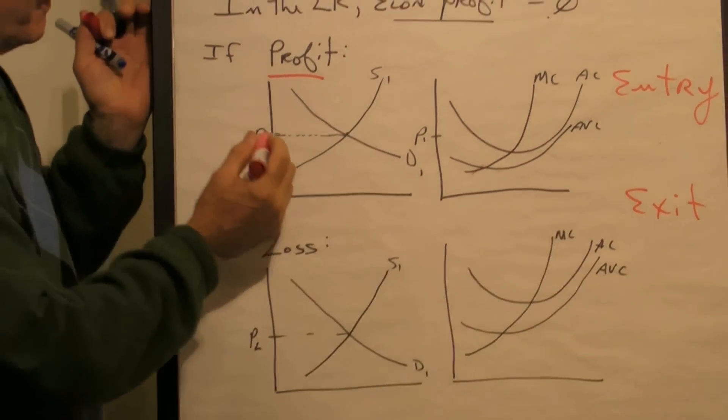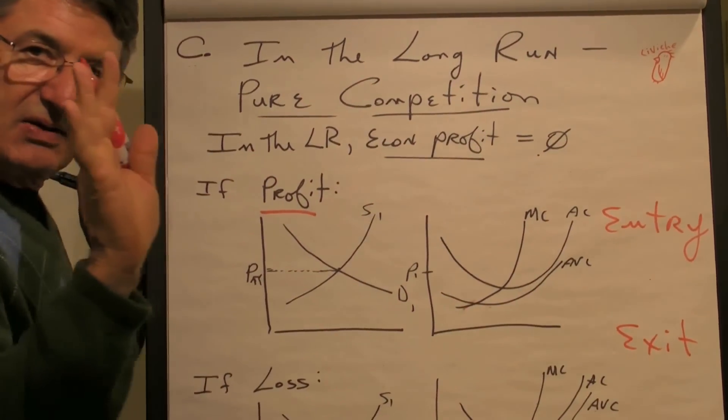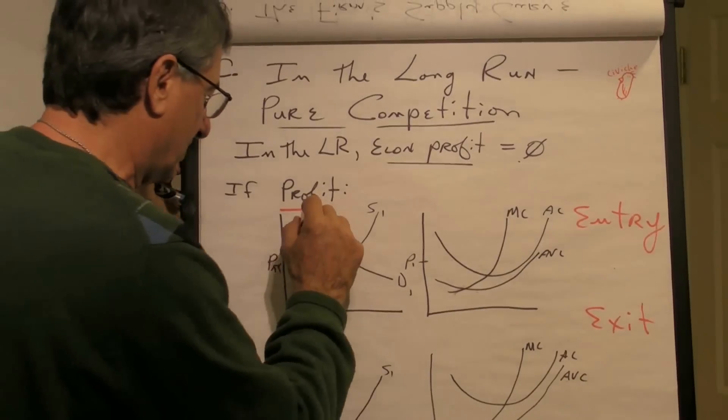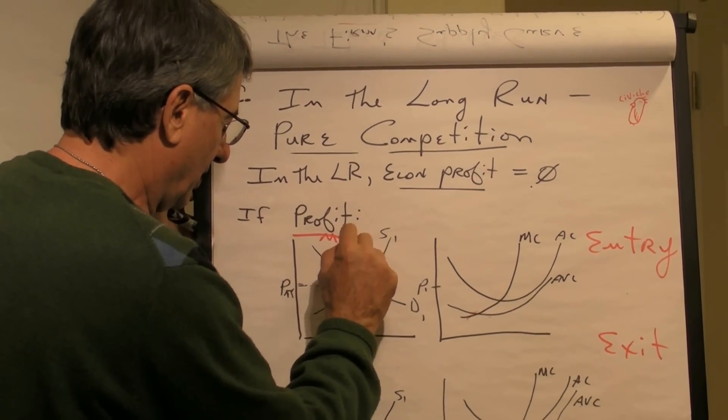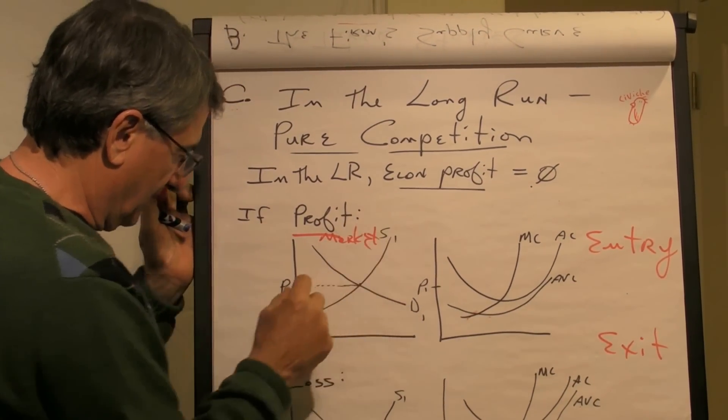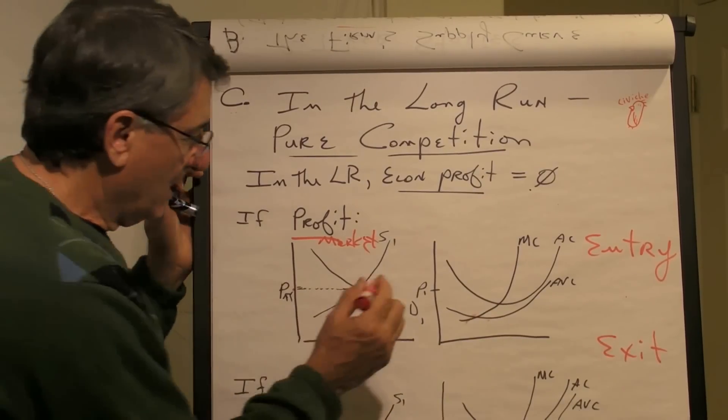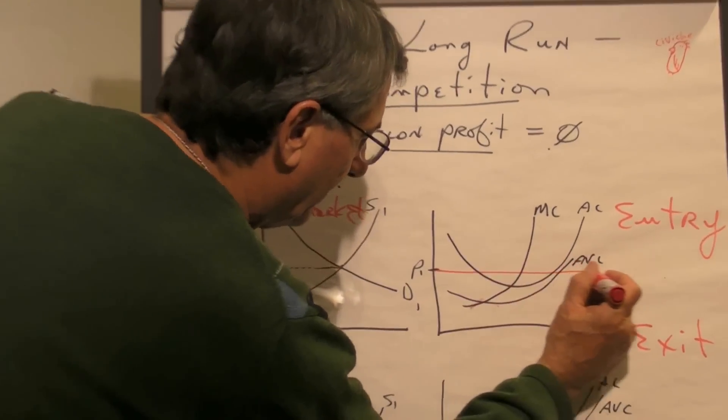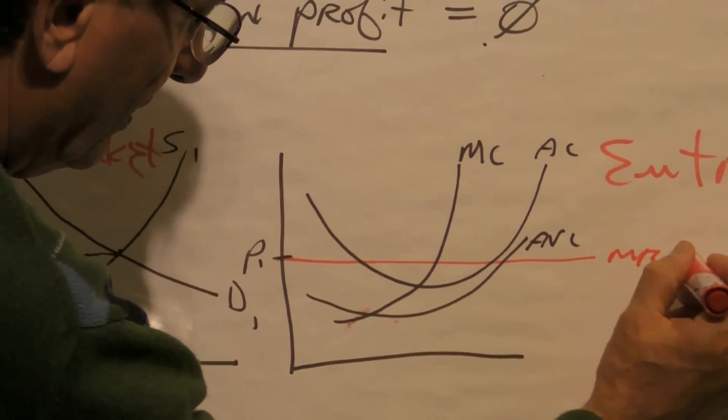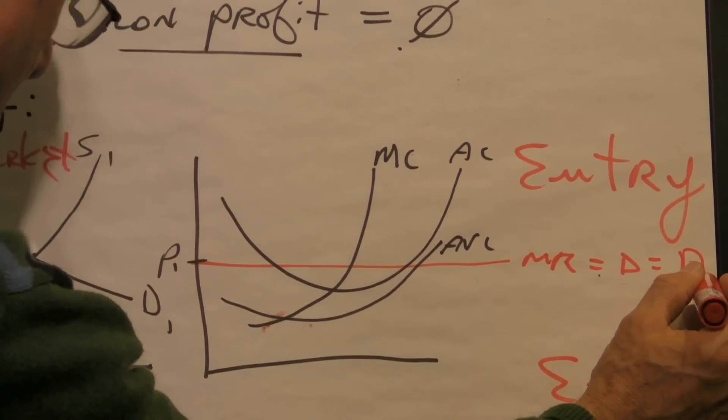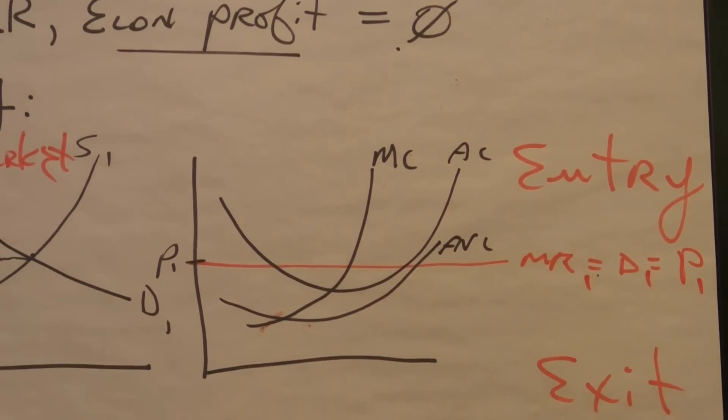So here's how it works. Remember, the price to the price taker comes from the market. So here's the market, and the market says the price is P—pi here for profit. So if this is the price, that becomes the marginal revenue equals demand equals price: P1, D1, MR1.